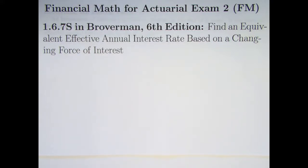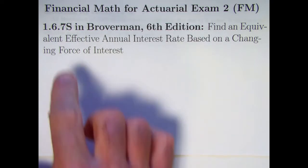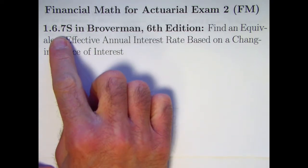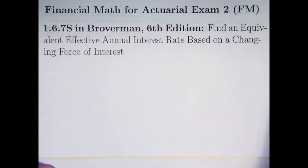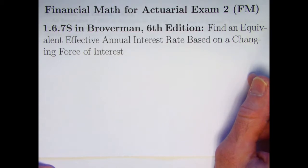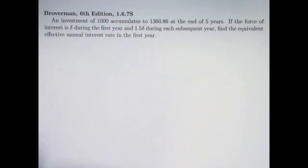In this video we'll be taking a look at an old actuarial exam problem corresponding to problem 1.6.7S in Broverman. We'll be finding an equivalent effective annual interest rate based on a changing force of interest. The problem's not too hard, so I think we can make this video shorter than normal.